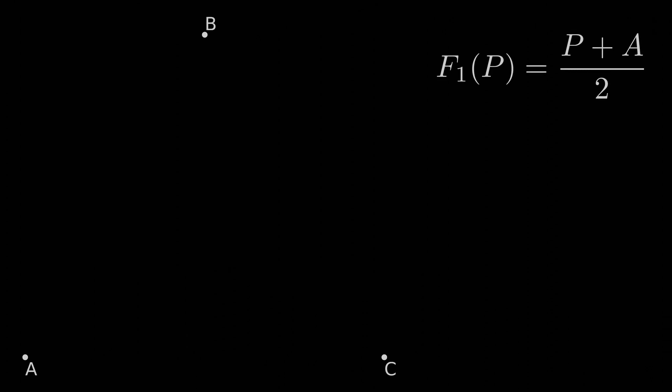Function 1 takes a point and returns another halfway towards A. Function 2 takes a point and returns another halfway towards B. And function 3 takes a point and returns another halfway towards C.